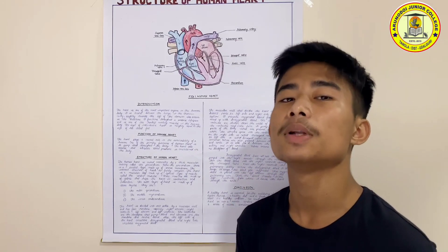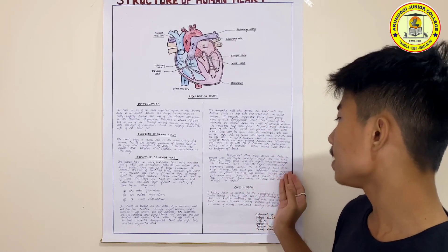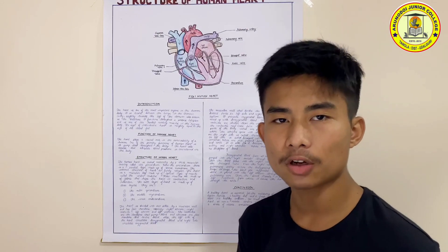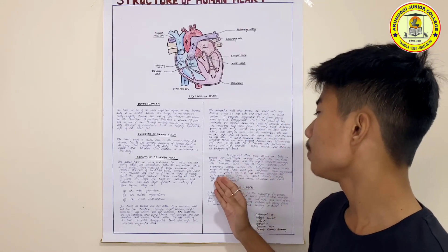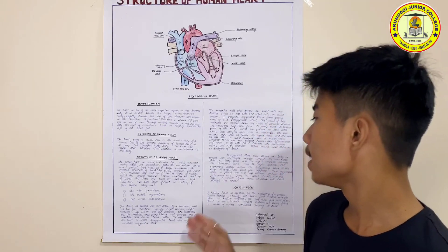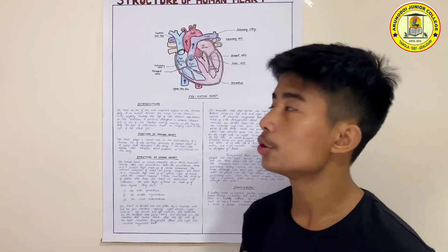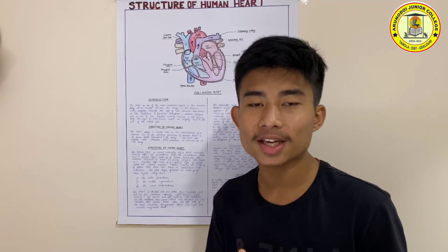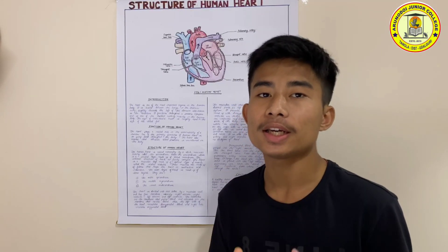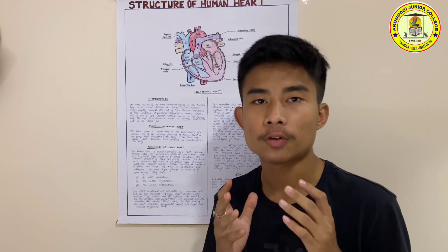From the right atrium, the pulmonary artery carries deoxygenated blood to the lungs, where the blood gets oxygenated. The oxygenated blood is then delivered to the left atrium through the pulmonary vein, and travels to the left ventricle, from where it leaves the heart through the aorta. Regular exercise, a healthy diet, and a fresh mind keep the heart in a healthy condition, which is why we must take care of our heart.